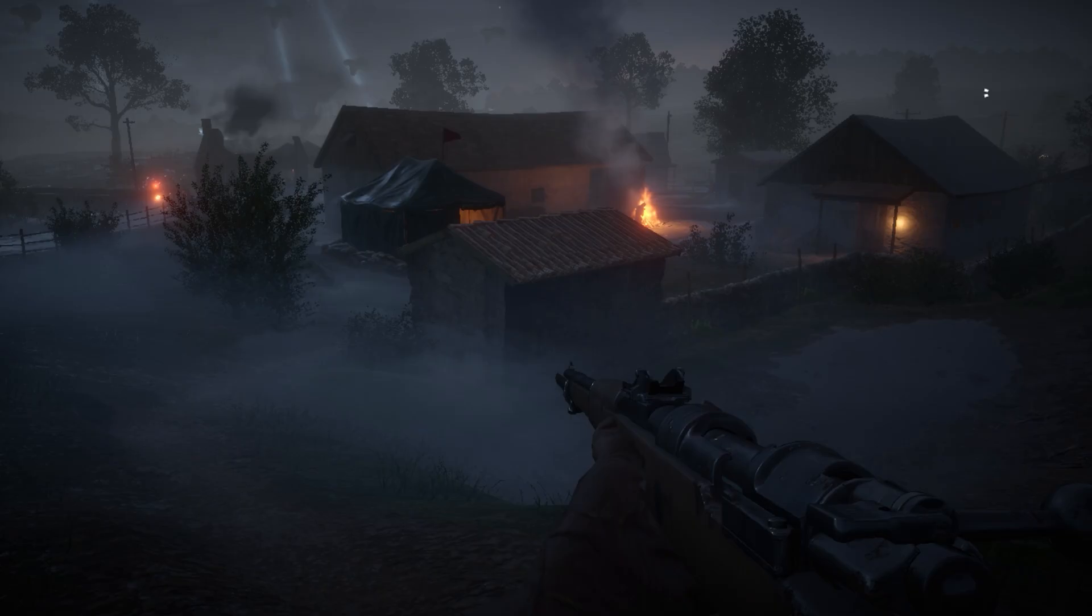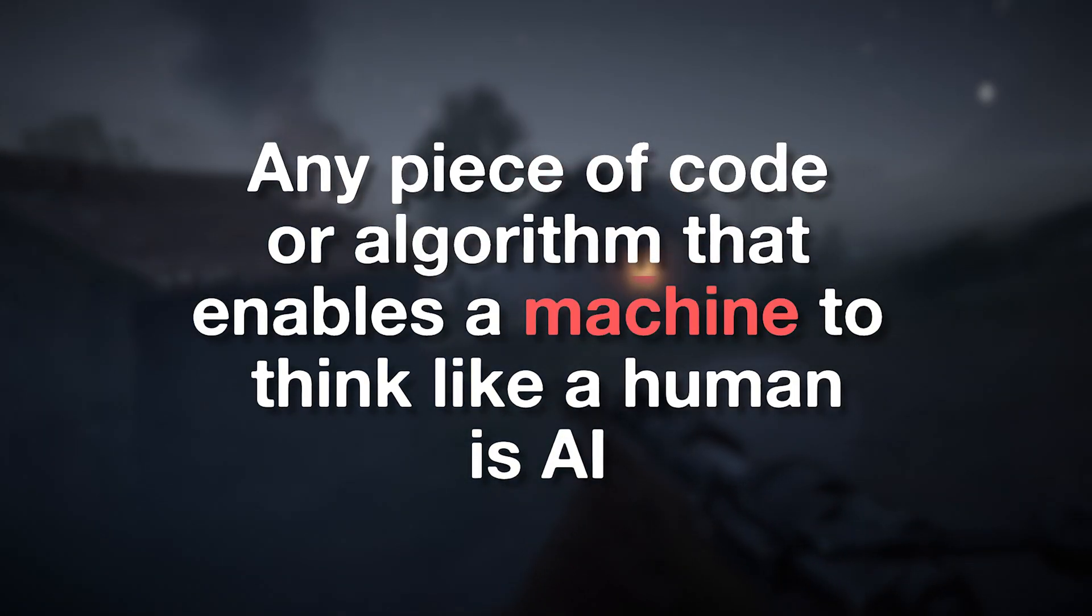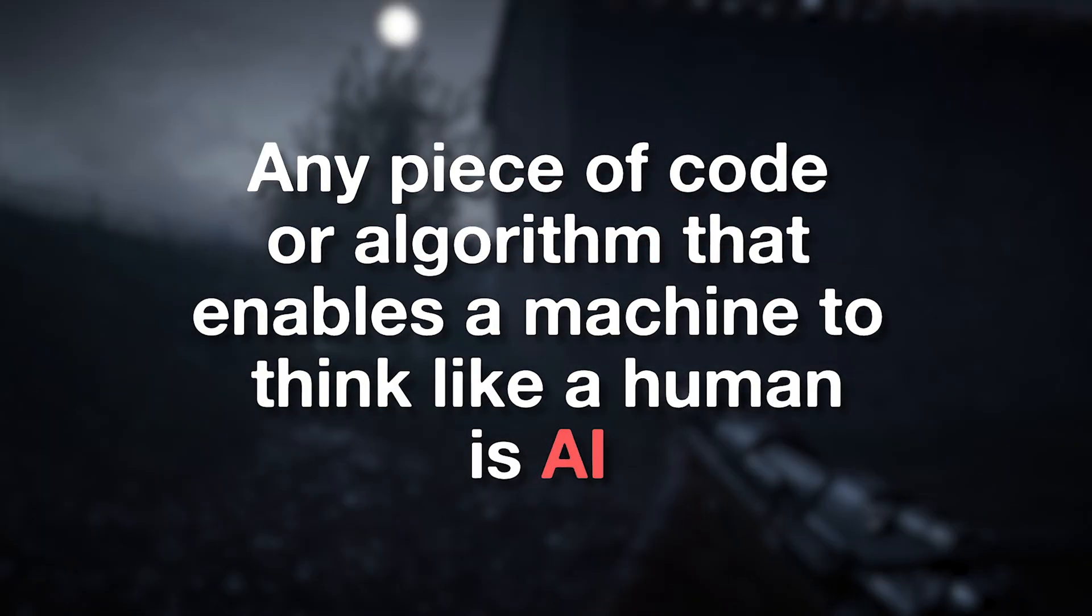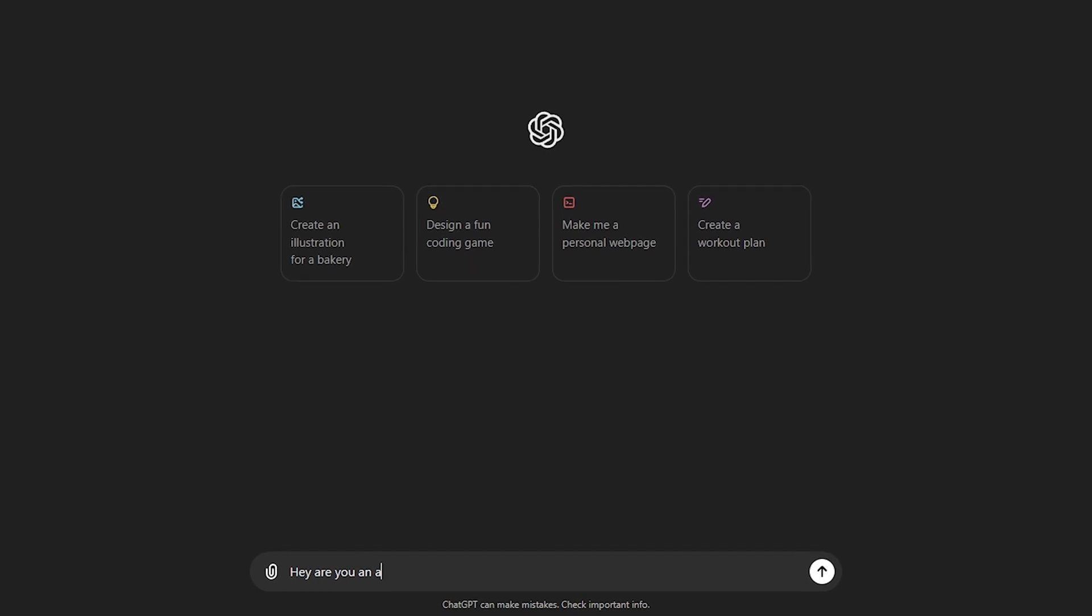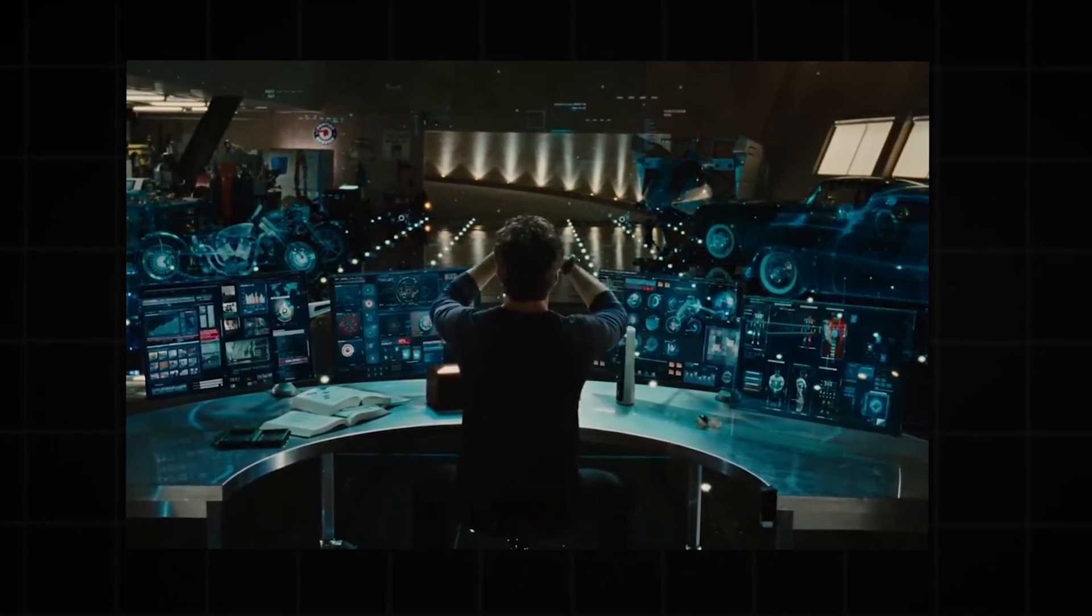In simple terms, any piece of code or algorithm that enables a machine to think like a human is AI. Some popular examples include the infamous ChatGPT or Jarvis from the Iron Man movies.